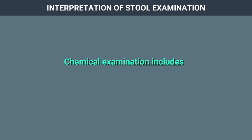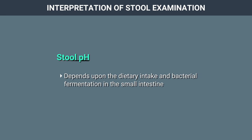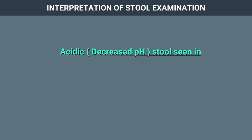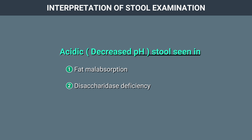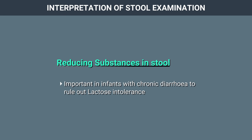Chemical examination of stool includes stool pH and reducing substances. Stool pH depends upon dietary intake and bacterial fermentation in the small intestine. Alkaline stools can be seen in cases of colitis, villous adenoma, diarrhoea, and antibiotic therapy. Acidic stools may be seen in cases of fat malabsorption, disaccharide deficiency, and carbohydrate malabsorption. Reducing substances in stool are important in infants with chronic diarrhoea to rule out lactose intolerance.